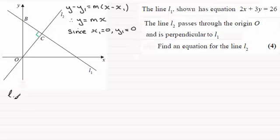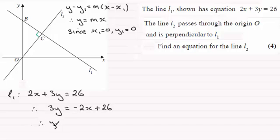We look at the line l1 and we know its equation is 2x plus 3y equals 26, and if we rearrange this into the form y equals mx plus c, m will be the gradient of l1. So let's subtract the 2x from both sides first of all and that will give us 3y equals minus 2x plus 26. Now if we divide both sides by 3 we end up with y equals minus 2 thirds x plus 26 over 3.